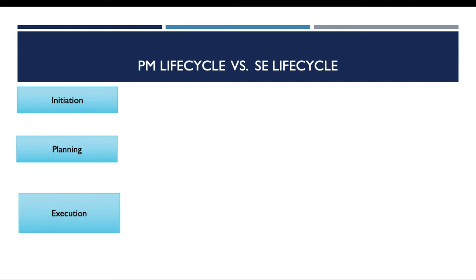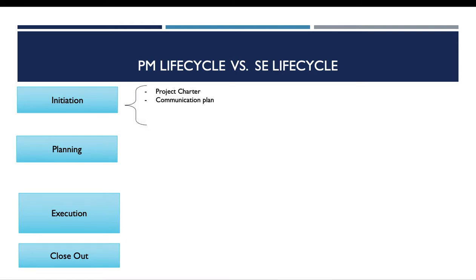For the initiation phase, the main deliverables are the project charter, the communication plan, and an initial project plan. For the planning phase, we deliver mainly the project scope plan, schedule, and budget.